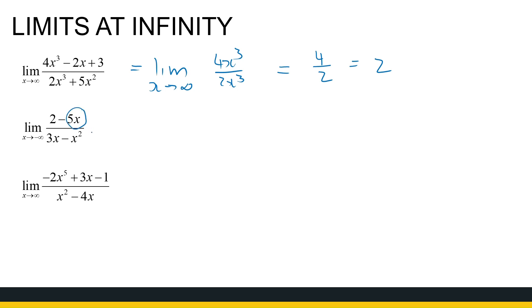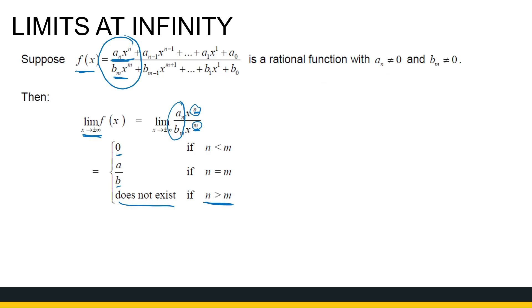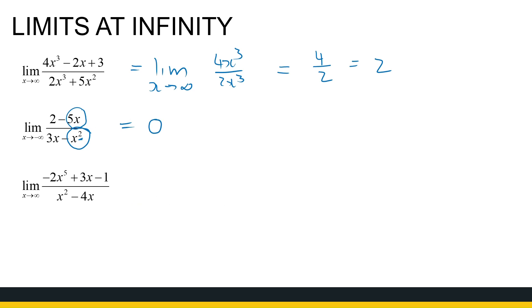The next one - these are my leading terms. Even though it's not in the same order, those are my leading terms. The denominator has a higher power than the numerator, so my limit value goes to zero.